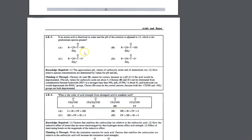So right here, AB3: if an amino acid is dissolved in water and the pH of the solution is adjusted to 12, what's the predominant species? You don't even have to deal with a side chain on this. You would just need to remember that typical pKas for the amine are 9 or 10, and typical pKas for the acid are about 2 to 3. So at pH 12, everything would be expected to be deprotonated.